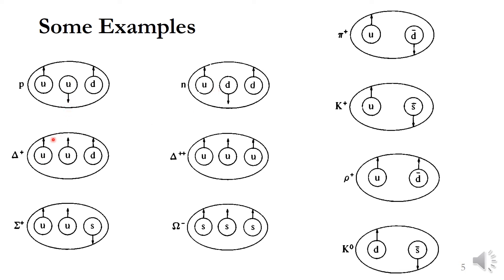Similarly, this is the resonance particle of the proton — Delta++, which is also UUD. You can see the quarks are the same, but the spin is different: all three quarks have spin upward, so the net spin is 1/2 + 1/2 + 1/2 = 3/2, or 3ℏ/2.